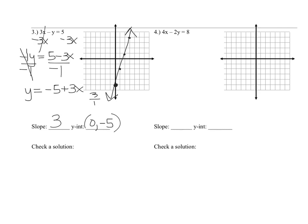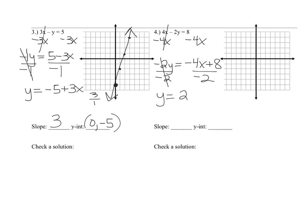For number 4, to get y alone, first cancel out the 4x by subtracting 4x. The 4x's cancel and you're left with −2y. Don't ignore that negative sign — you get −2y = −4x + 8, which you can also write as 8 − 4x. Divide everything by −2, and you get y = 2x − 4. So the slope is 2 and the y-intercept is (0, −4).